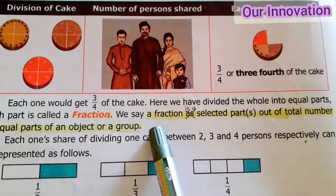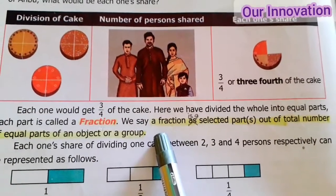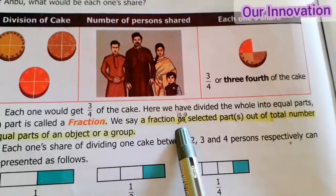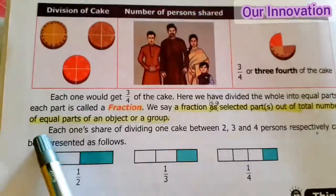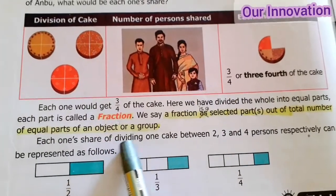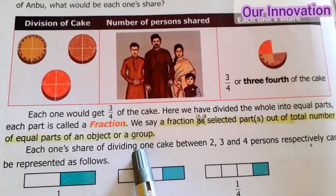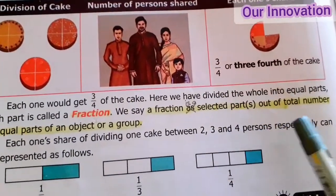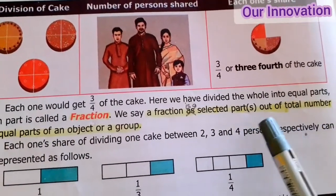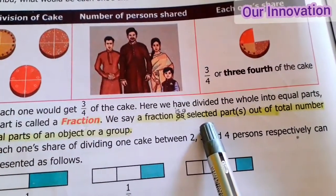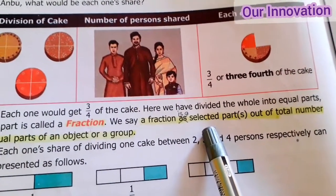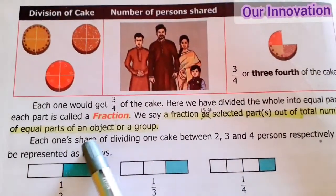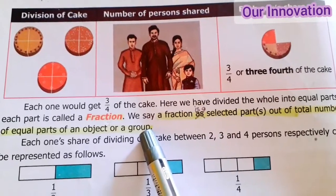A fraction is selected parts out of the total number of equal parts of an object, area, or group. This is the definition of a fraction.